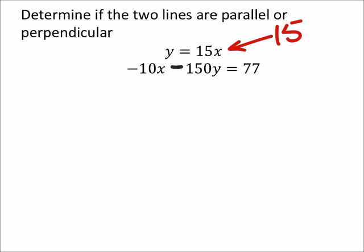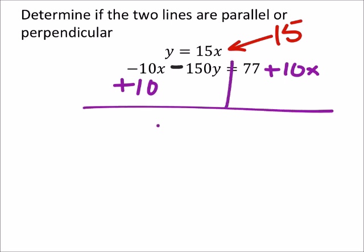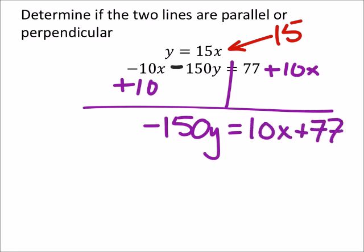For this one, we should probably change it into slope-intercept form. So I'm going to add 10x to both sides of the equation. We've got negative 150y, and I'm just flipping that around so that it's in slope-intercept form, and divide both sides by negative 150.